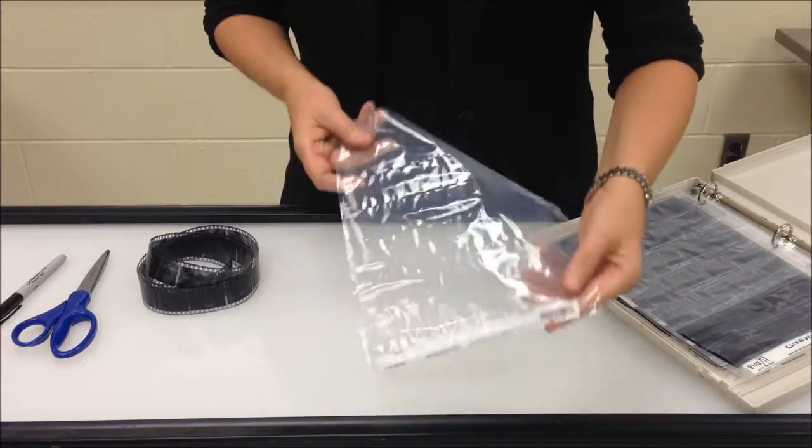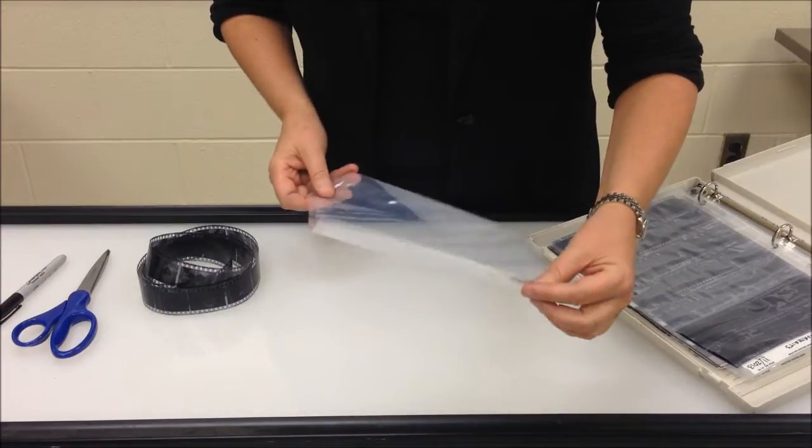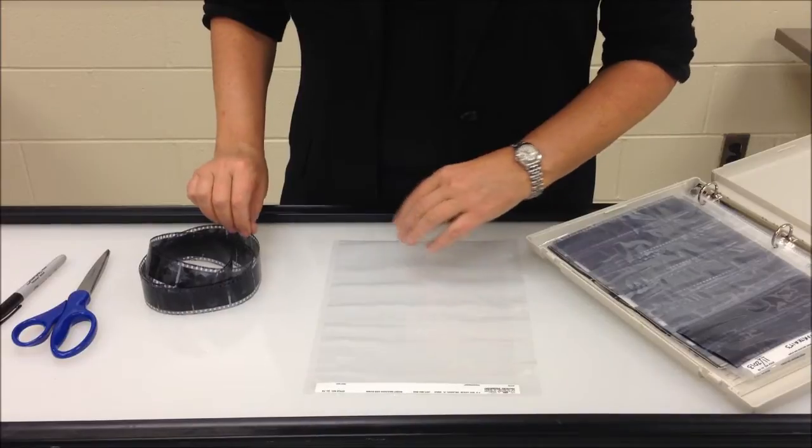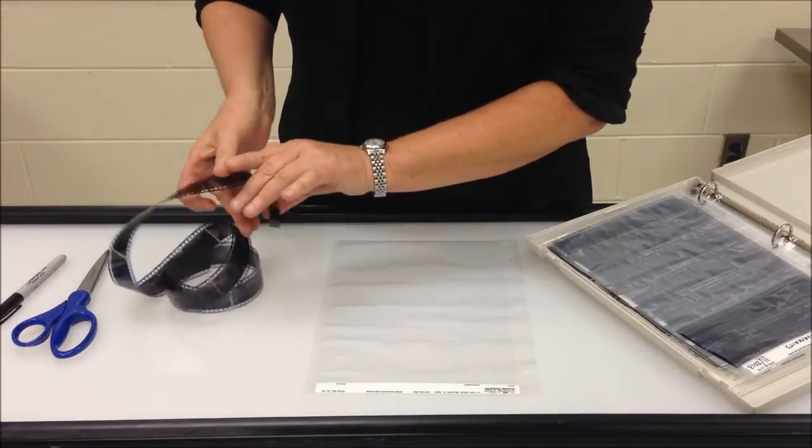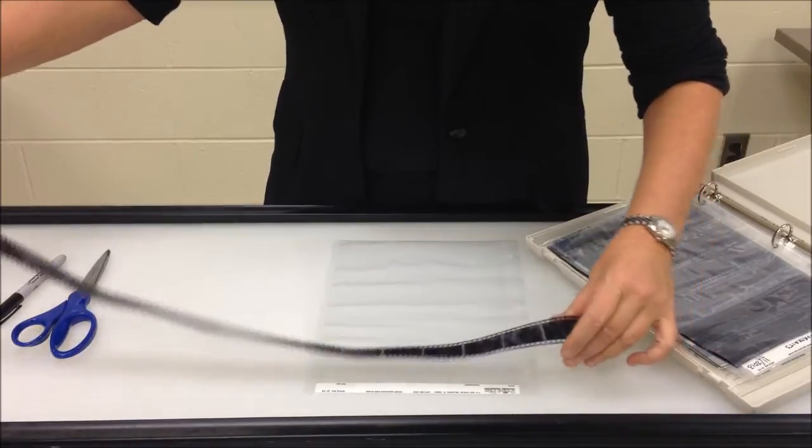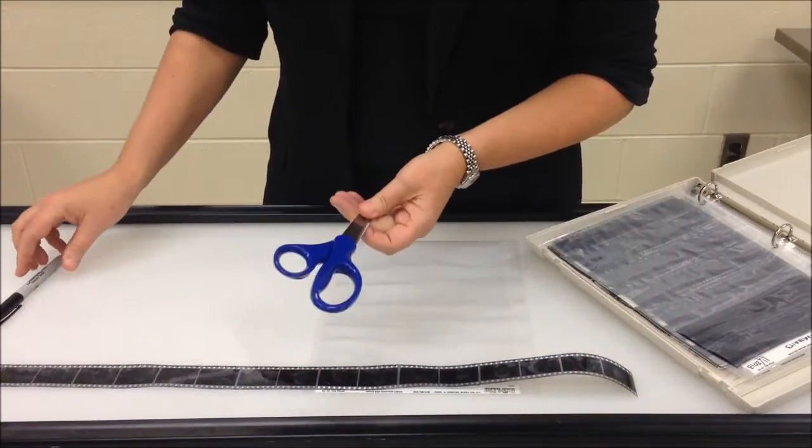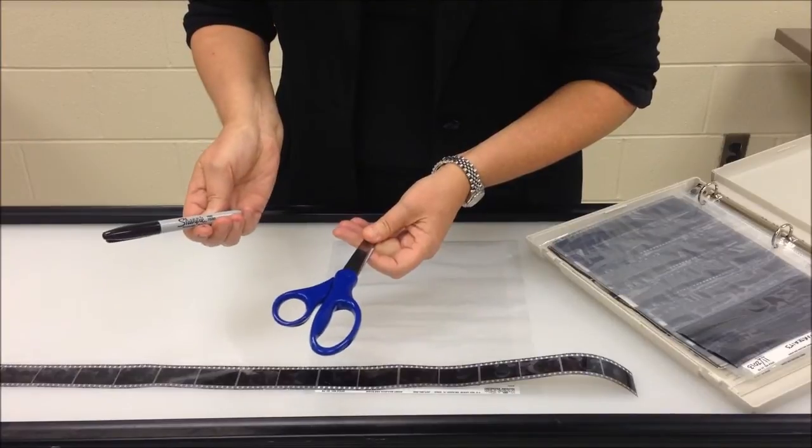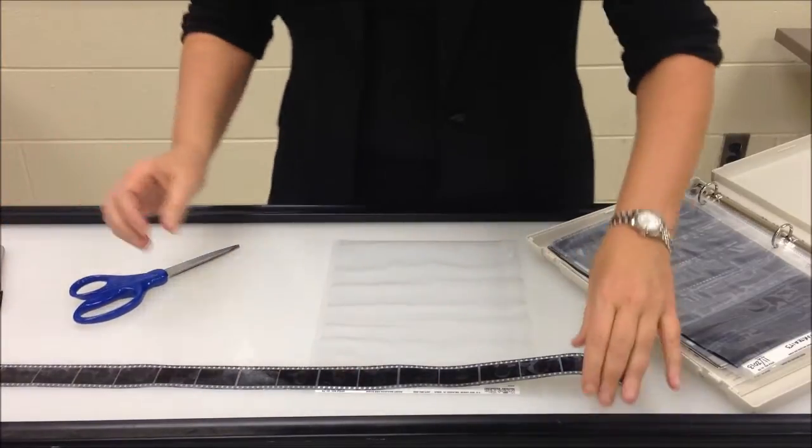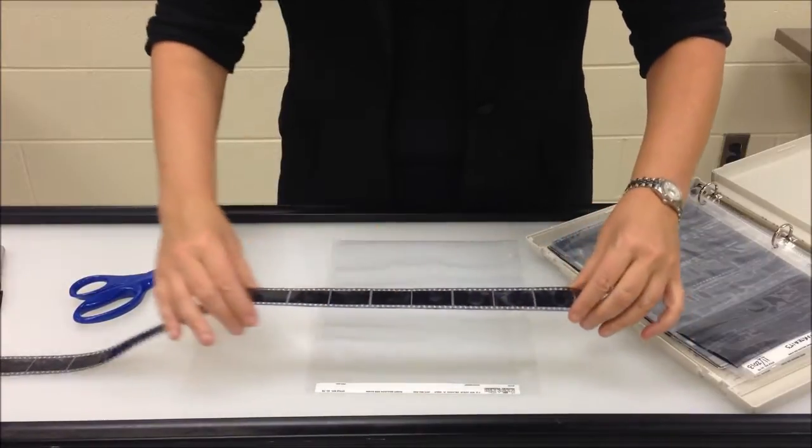You're going to need a film sleeve for the size and format of your film negatives, your fully processed and fully dried strip of negatives, a pair of scissors, and perhaps a Sharpie pen to write on your plastic sleeve when you're finished.